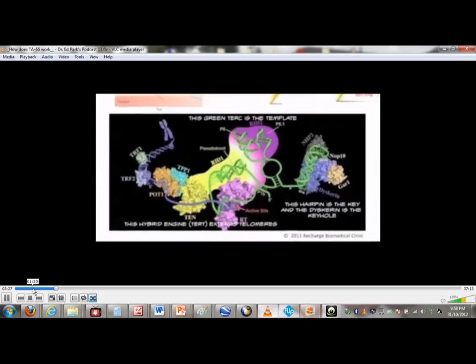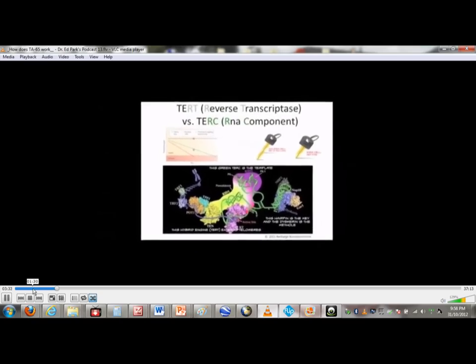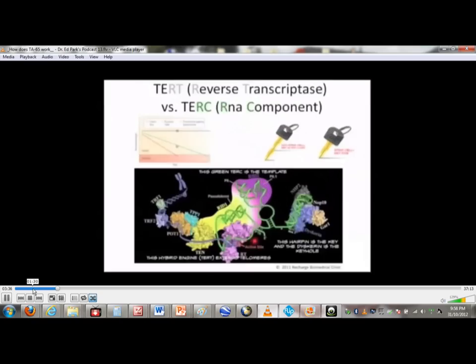The green is the RNA component, TERC, RNA component. That is the template, which is the printing press that tells you which six base pairs you're going to print out in the case of humans. Maybe it would be 23 in the case of yeast. This green thing is the RNA component, and this is the key to run the engine, which is the TERT, reverse transcriptase. The naming is somewhat troublesome, but RT basically is an engine. It's a mixture of a bunch of molecules. And RC is the RNA component, which is a single molecule, single RNA molecule.